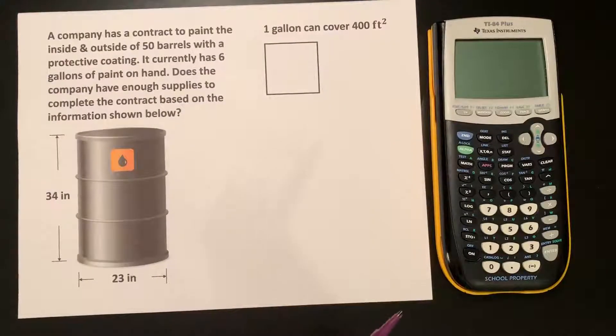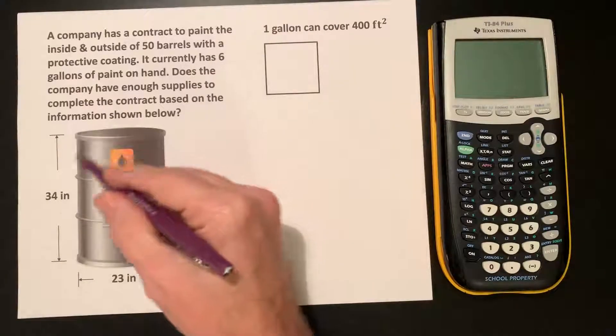A company has a contract to paint the inside and outside of 50 barrels with a protective coating. It currently has 6 gallons of paint on hand. Does the company have enough supplies to complete the contract based on the information shown below? Here we have a barrel.